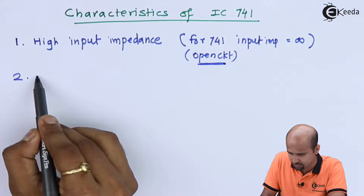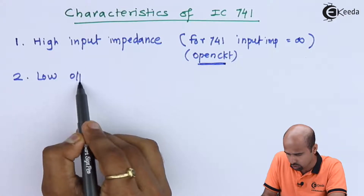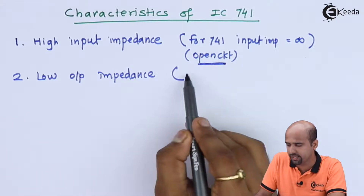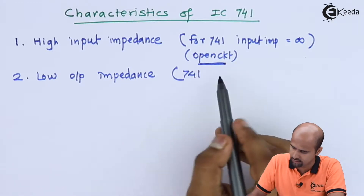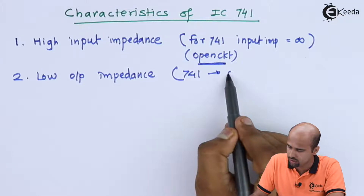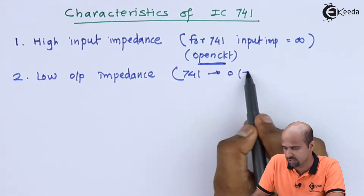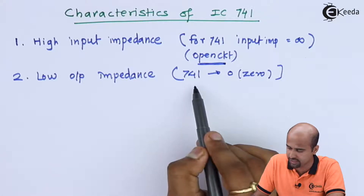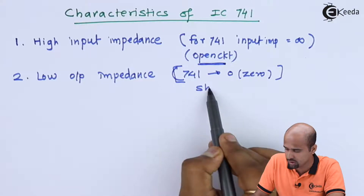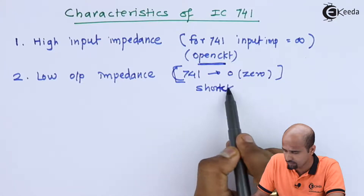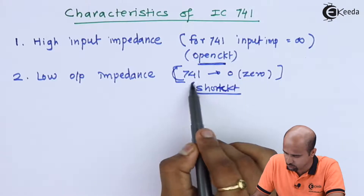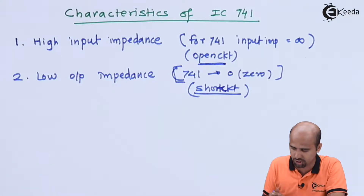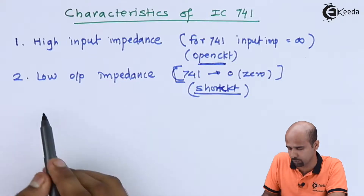The second characteristic is low output impedance. Practically, 741 gives you zero output impedance, and this zero output impedance indicates that it is nothing but a short circuit. We will also look into the internal circuit diagram to understand what is meant by short circuit and open circuit at the input and output sides.